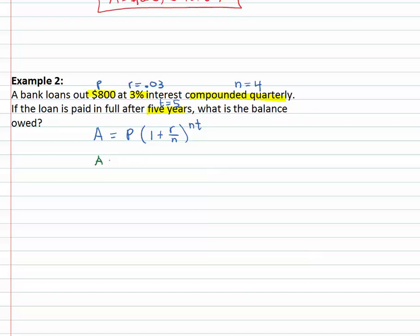So let's plug it in. Our future value, our future amount is A is equal to the present value, eight hundred, times one plus the interest rate, point oh three, over N which is four, to the NT, four times five.